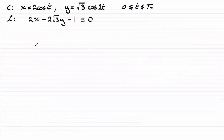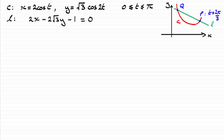For the last part of the question, we've got to find where the normal L cuts the curve C again at a point Q. Our normal L can cut curve C at two points, and we've got to find this point Q. To do this, we use simultaneous equations. Numbering the parametric equations 1 and 2, and the equation for L as 3, we substitute equations 1 and 2 into equation 3.